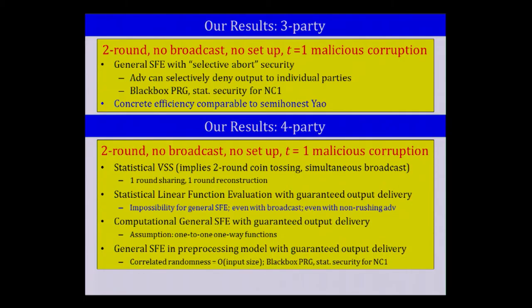We complement this positive result with a negative result for statistical general SFE — this negative result holds even assuming a broadcast channel and even with a non-rushing adversary. If you're willing to assume computational assumptions, we can show general SFE in two rounds with guaranteed output delivery, and our assumption is very minimal: we only need one-to-one one-way functions, not even trapdoor computations. In the preprocessing model, we get general SFE with guaranteed output delivery and statistical security for NC1, where the correlated randomness needed is equal to the length of the inputs — as opposed to prior work requiring exponential size.